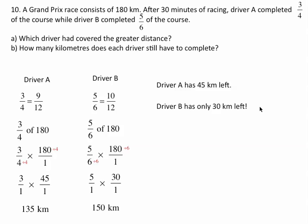You could do it that way, or you could say driver A has gone three-quarters of the way around the track, so that means driver A has one-quarter left, so one-quarter of 180 is 45 kilometers. You can say that driver B has gone five-sixths, so driver B only has one-sixth, and one-sixth of 180 is 30 kilometers.